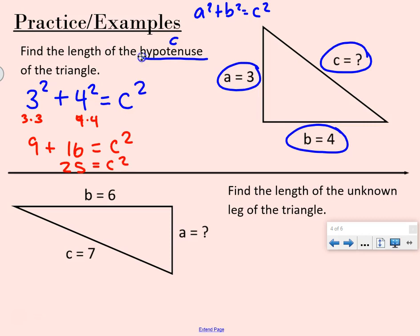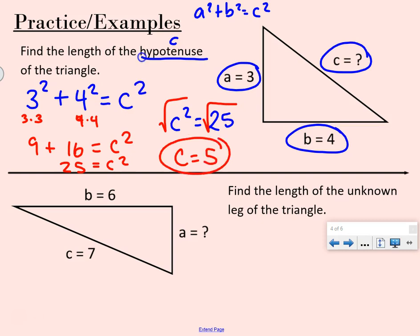Now we're solving a quadratic equation — we have C squared equals 25. To solve for C, we take the square root of both sides. The square root of C squared is C, and the square root of 25 is 5. So C, the length of the hypotenuse, is 5.